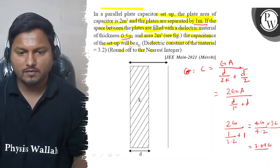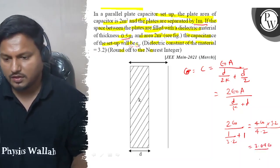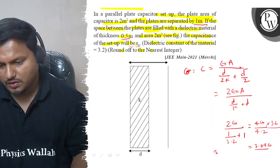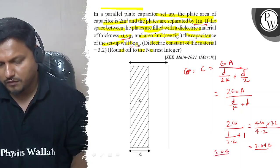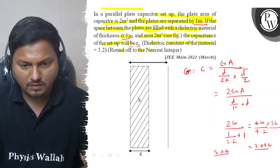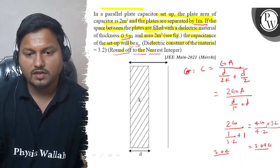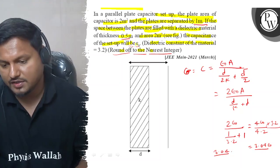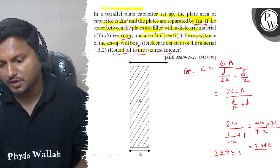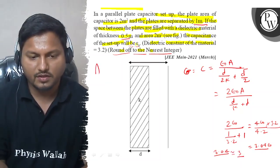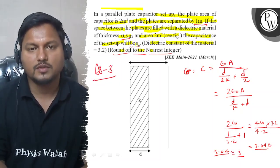So if we compare with this, the answer will be 3.04, but the fact is they are directing us to round off to the nearest integer. So the nearest integer of 3.04 will be 3. Answer is 3 for this question.